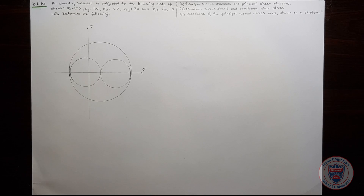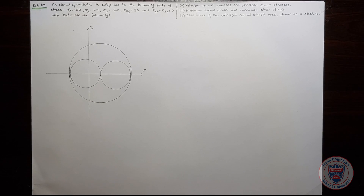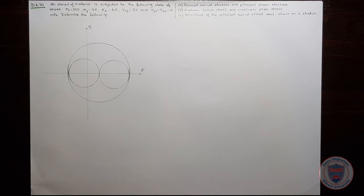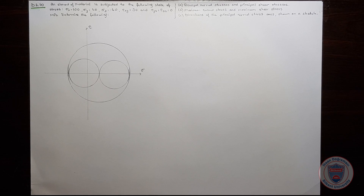In this question, we have an element of material which is subject to the state of stress: sigma x is equal to 100 MPa, sigma y is equal to 40 MPa, sigma z is equal to minus 60 MPa, and tau xy is equal to 30 MPa. We also know that tau yz and tau zx are equal to zero.